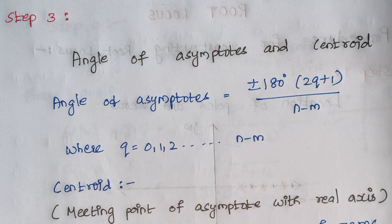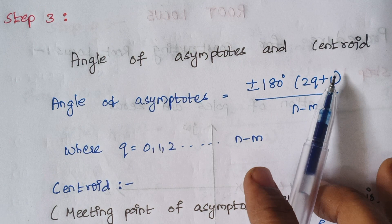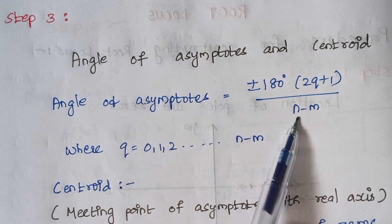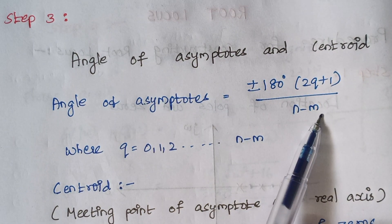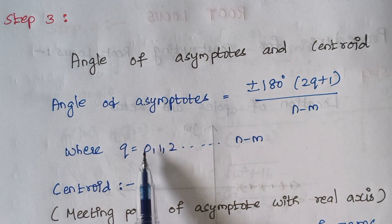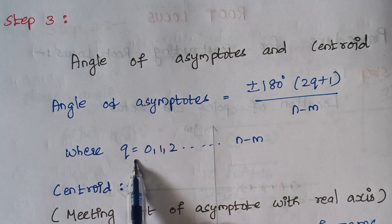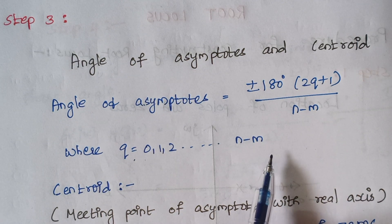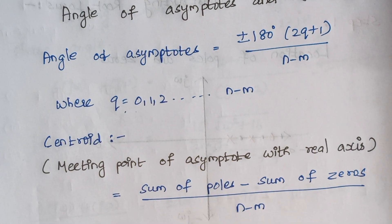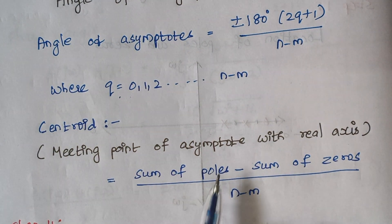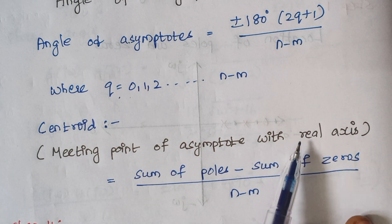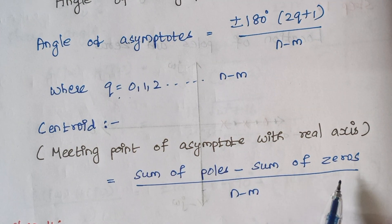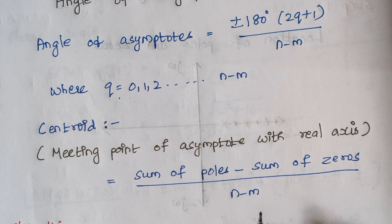Step 3 is angle of asymptotes and centroid. The formula for angle of asymptotes uses n for number of poles and m for number of zeros, and q is calculated for values up to n minus m. Centroid is the meeting point of asymptotes with the real axis, given by the formula: sum of poles minus sum of zeros, divided by n minus m.